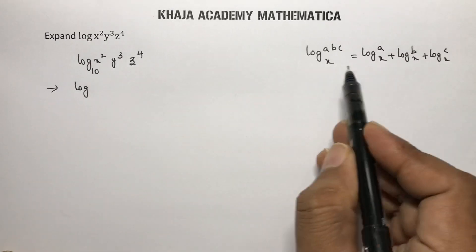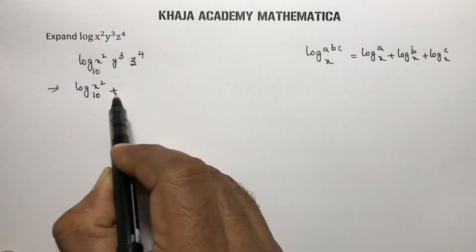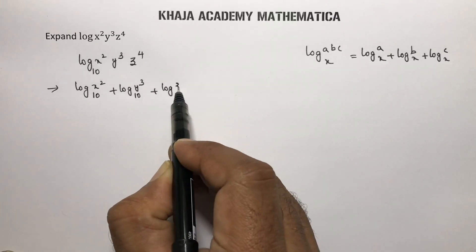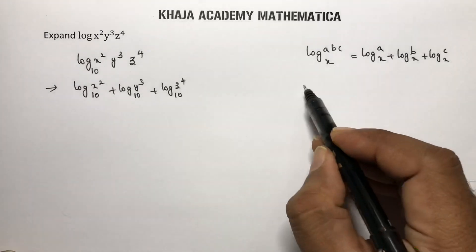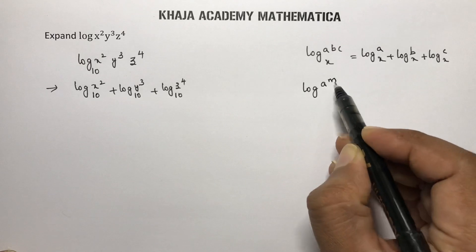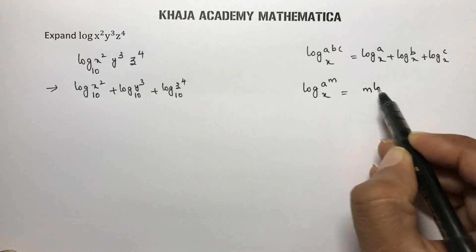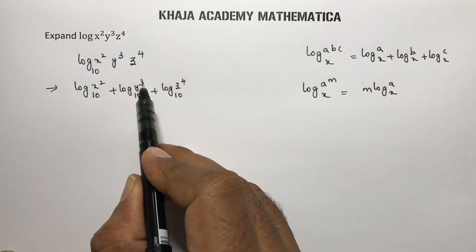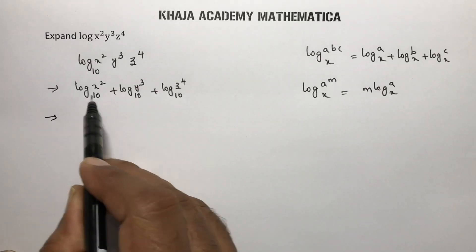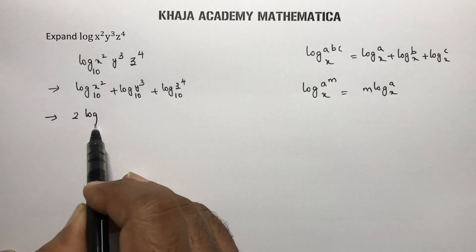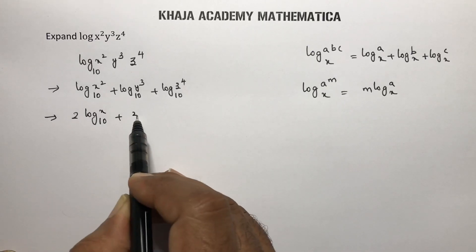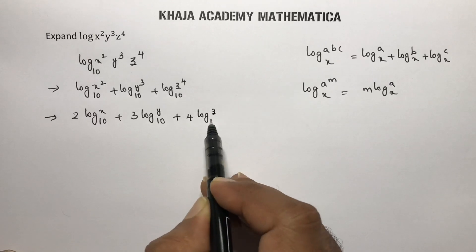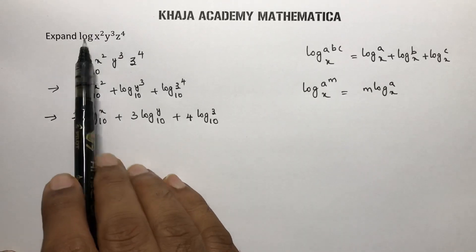Applying the product rule, we get log x² to the base 10 plus log y³ to the base 10 plus log z⁴ to the base 10. Now applying the power rule, log(a^m) to base x equals m·log a, where the powers are 2, 3, and 4, giving: 2·log x to the base 10 plus 3·log y to the base 10 plus 4·log z to the base 10. This is the expanded form of log x² y³ z⁴.